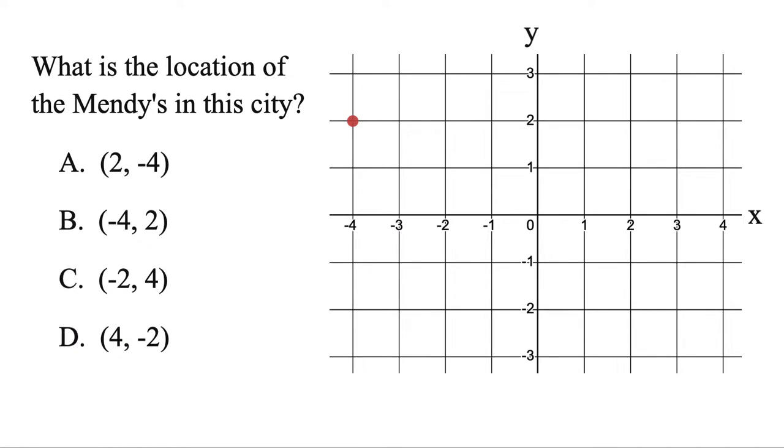What is the location of this point on the coordinate plane? We're going to always start in the middle to find a point. And you're going to go left or right first. So here we go left 4. The first number has to be negative 4. And as we can see, there's only one that even has that. So it's definitely going to be B. Because then we go up 1, 2, positive. That's the Y. So X first, Y second, and that's it.